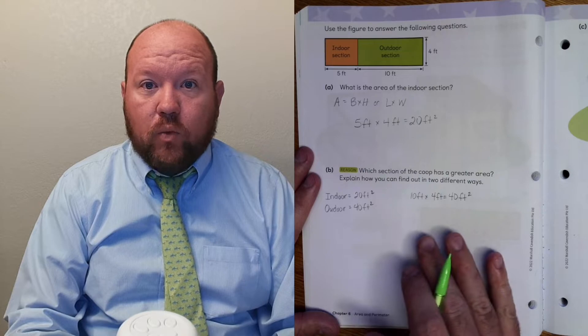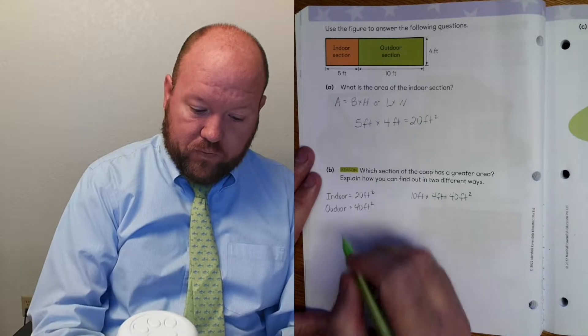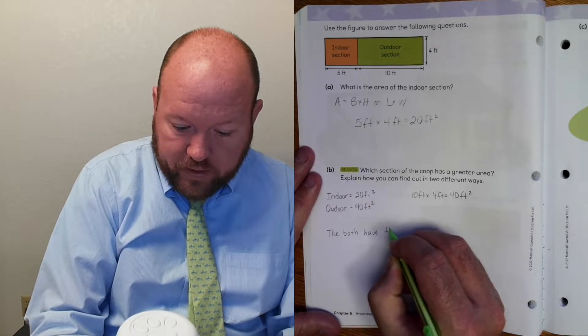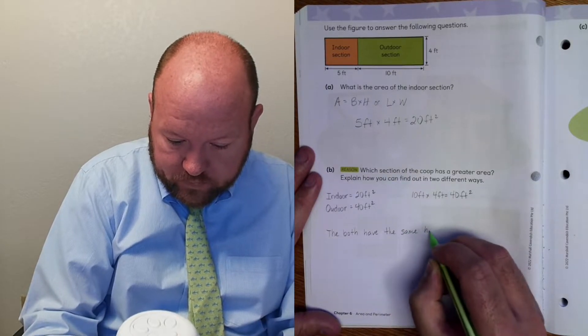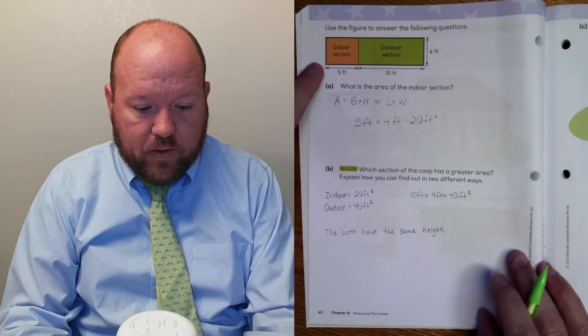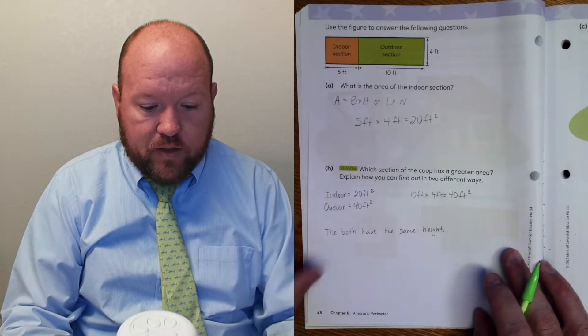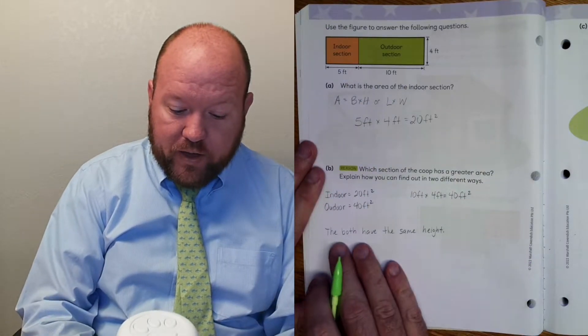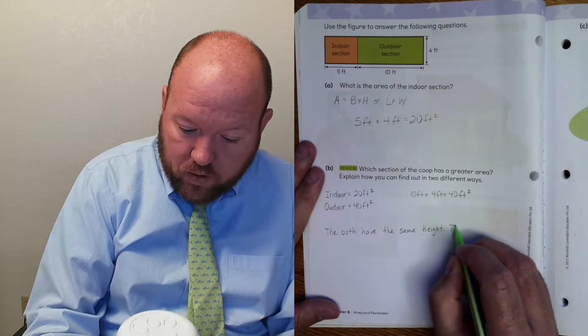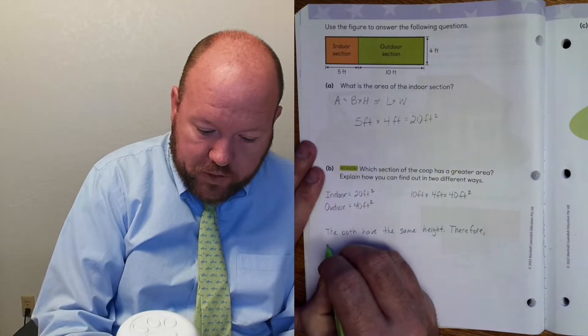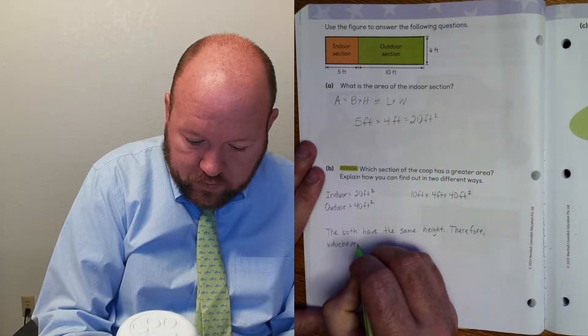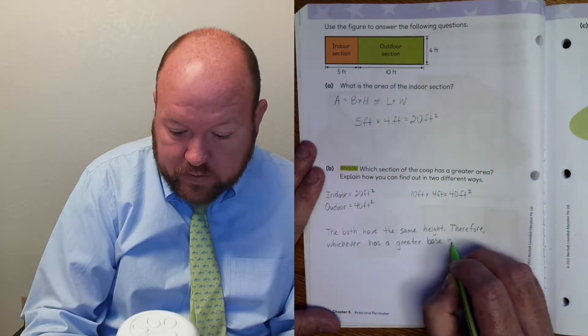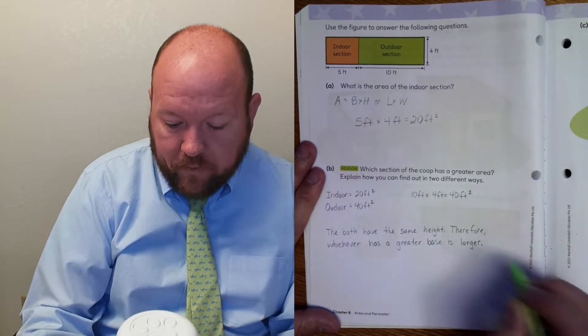The outdoor base times height. Base is ten times height, which is four feet. Ten times four is forty, and foot times foot is foot squared. So it's forty square feet. So there, we know that the outdoor section is larger. How else could we figure this out?